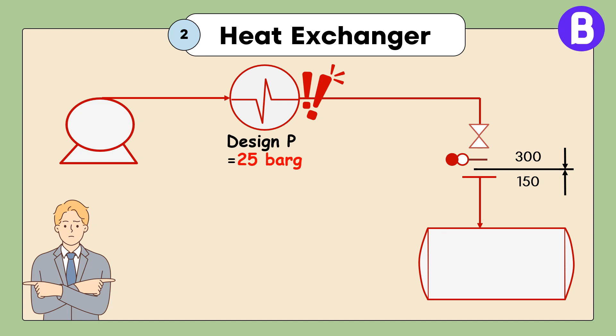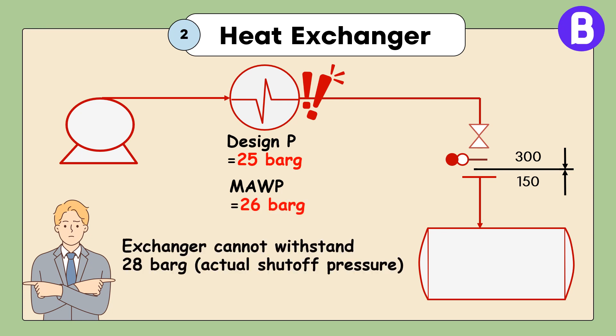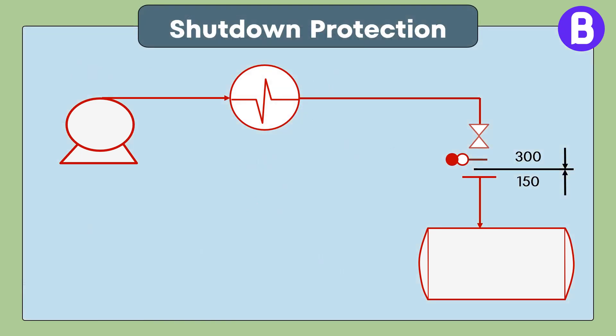The exchanger was mechanically designed to withstand only 25 bar gauge. Based on mechanical calculations, the maximum allowable working pressure was 26 bar gauge. This means that heat exchanger cannot withstand pump shutoff pressure in case a blockage occurred downstream while the pump was still running. We now have a weak point at the pump discharge system.